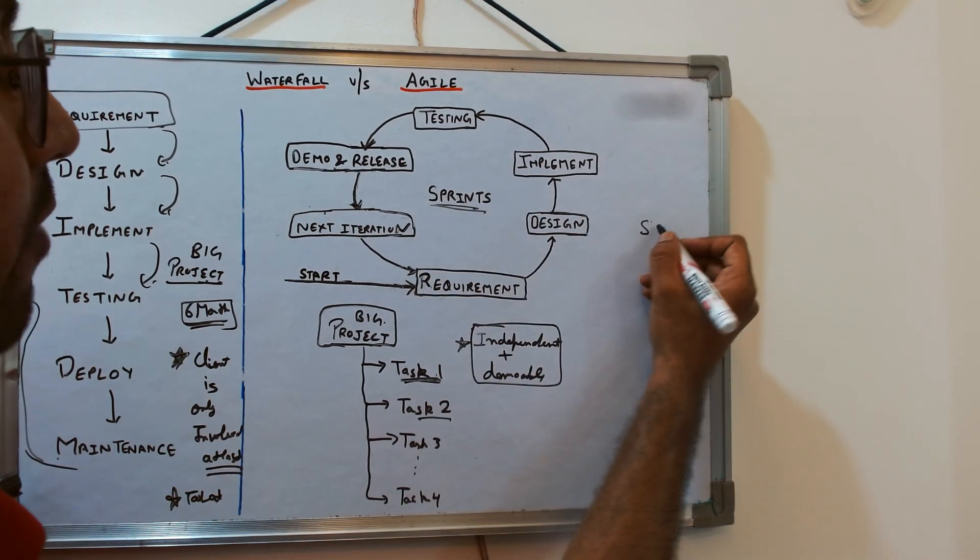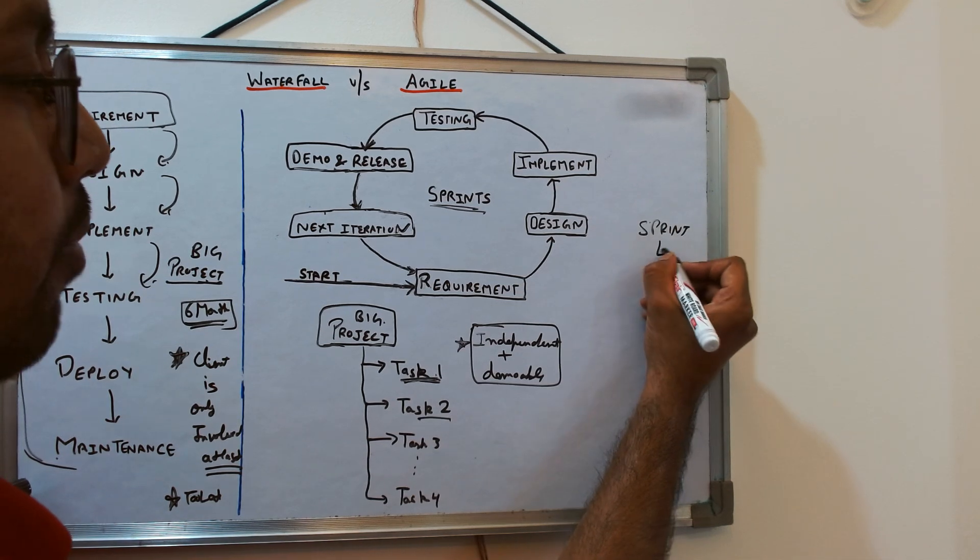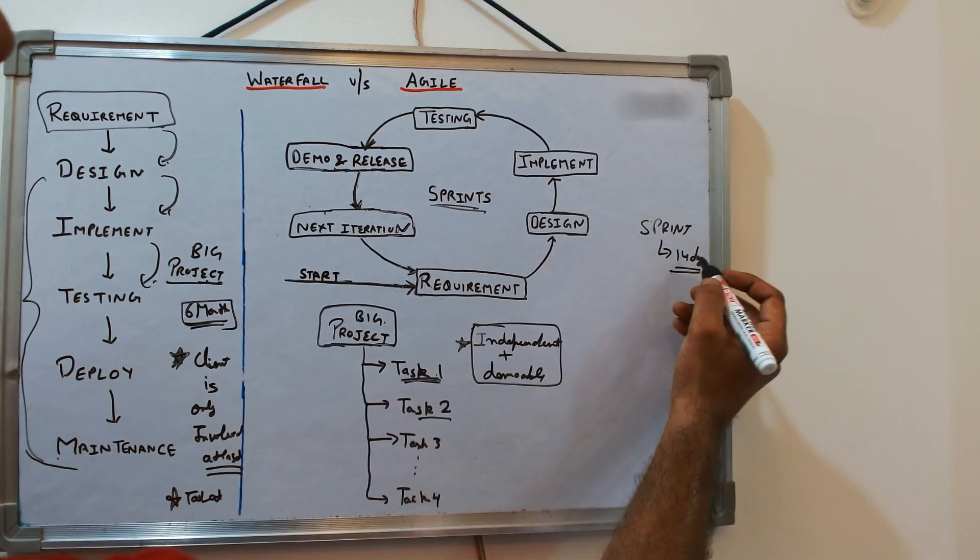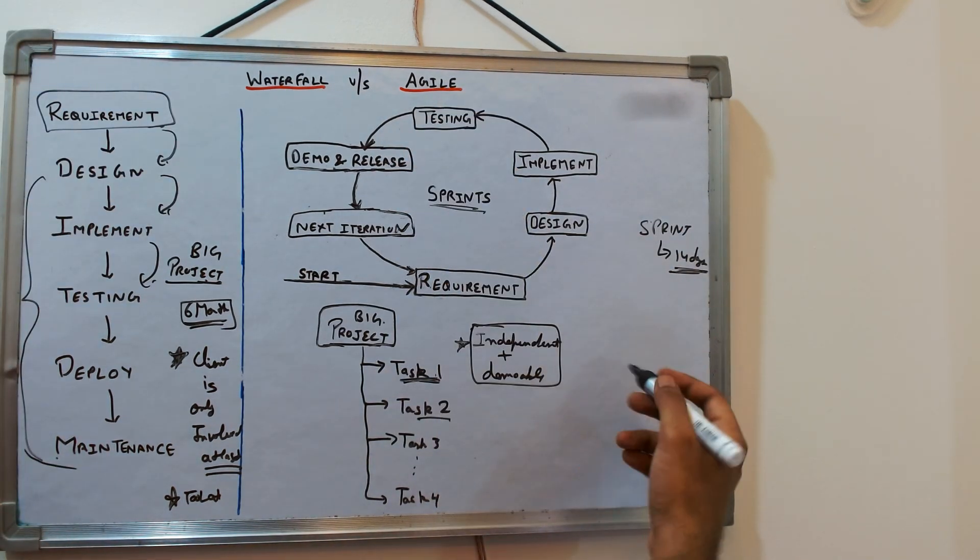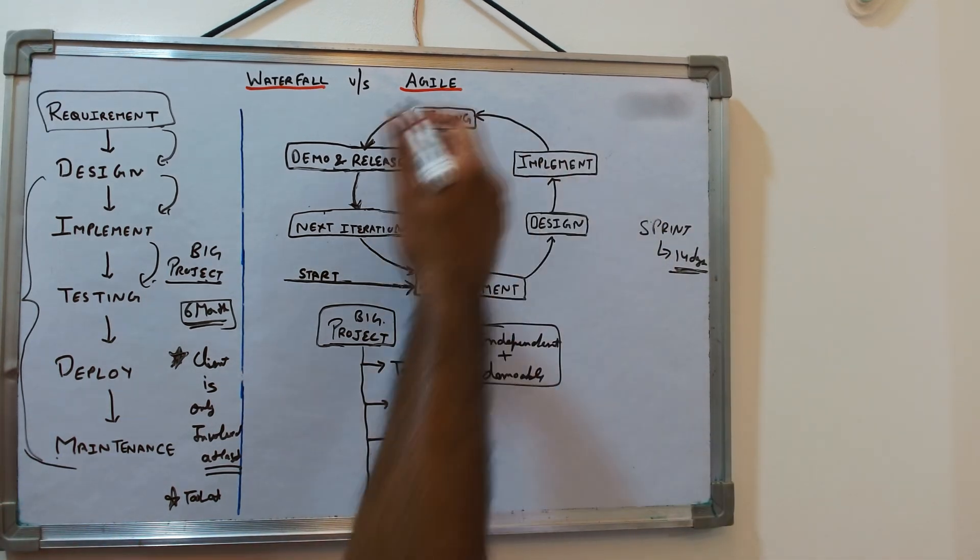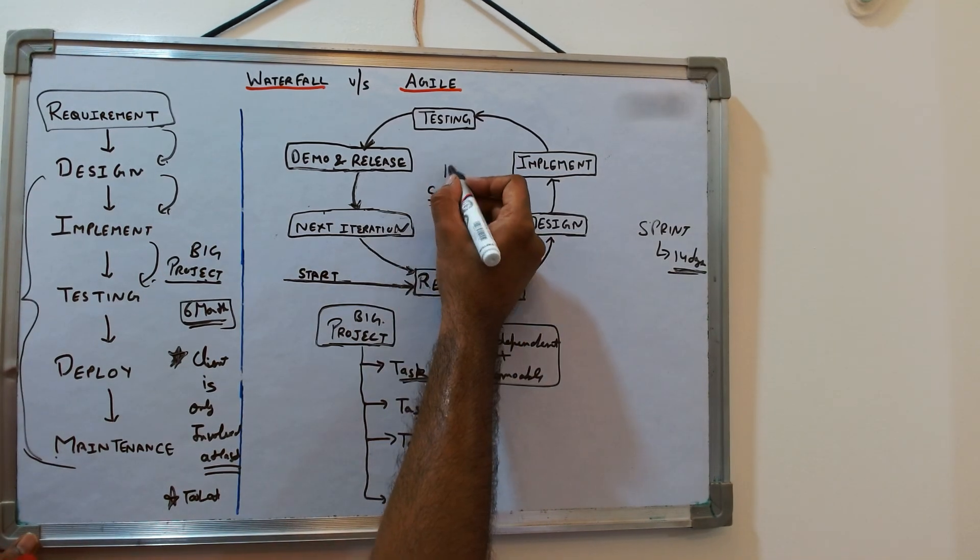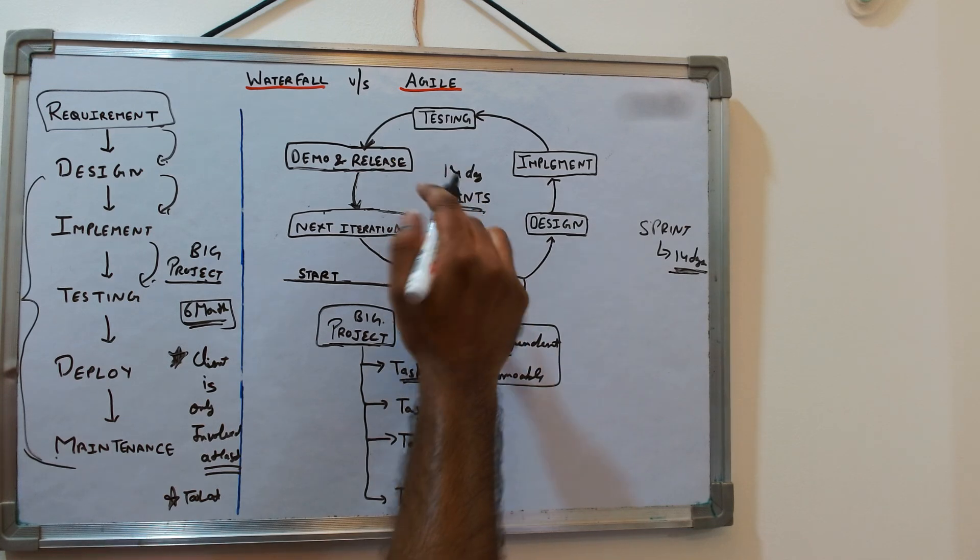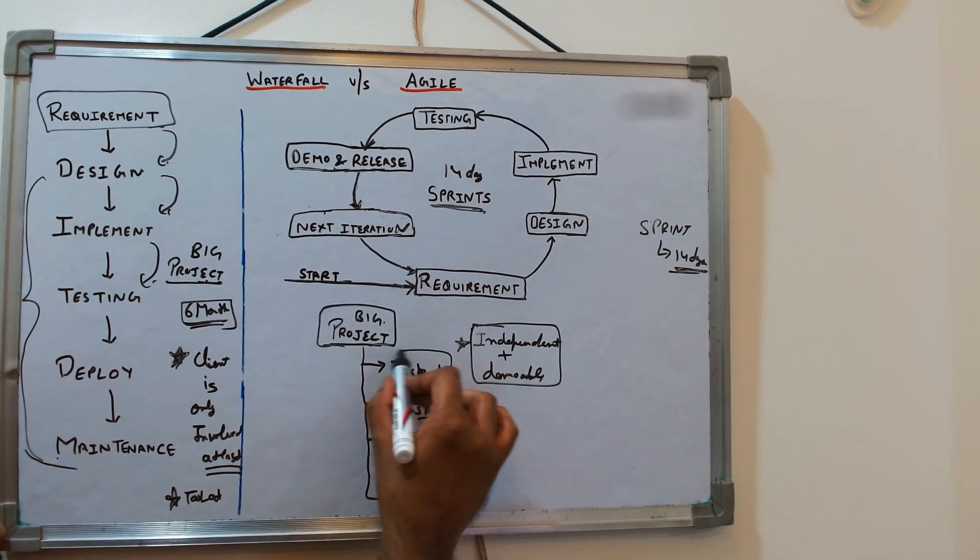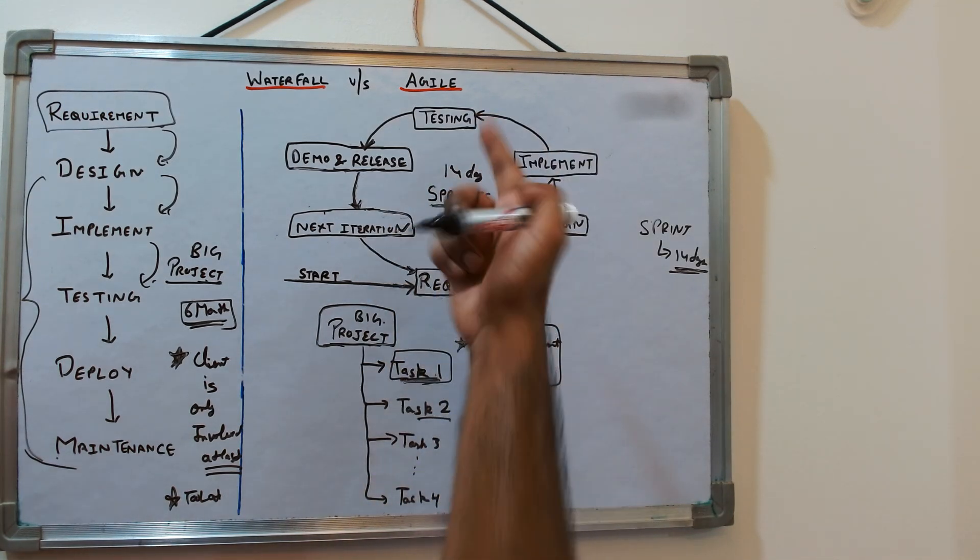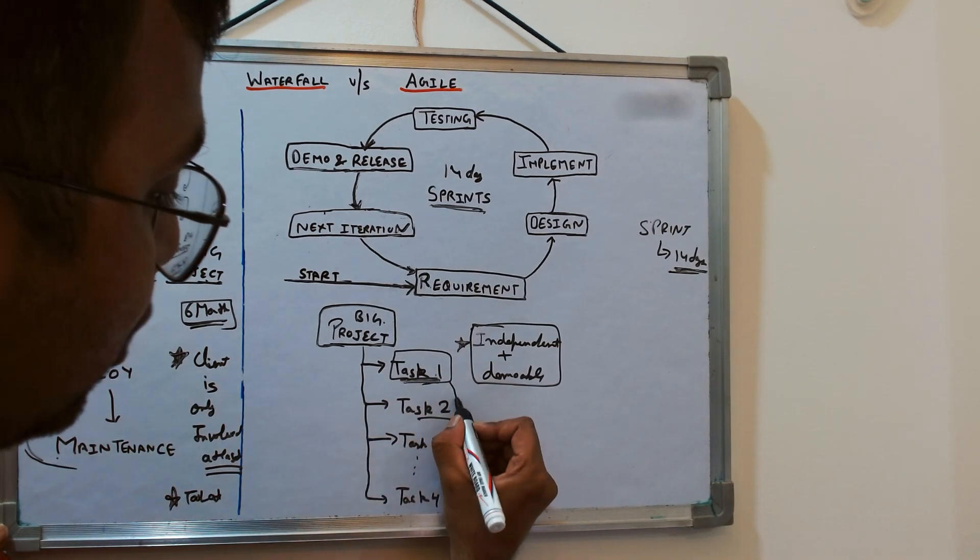If you see the sprint, generally the de facto sprint happens for 14 days. Some companies might follow 21 days or 10 days, but generally, if you see the agile documentation, everybody follows a 14-day cycle. Now let's say we're following a 14-day sprint cycle. Can we complete this task in 14 days? If this task itself is big and requires at least two cycles, means two sprints, let's say 28 days, this task has to be further divided into subtask one, subtask two, and so on.